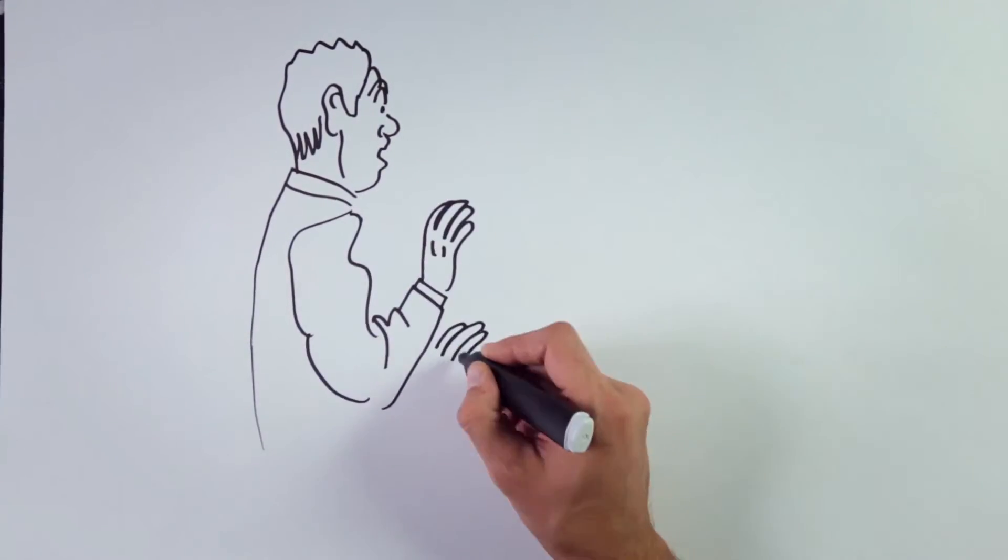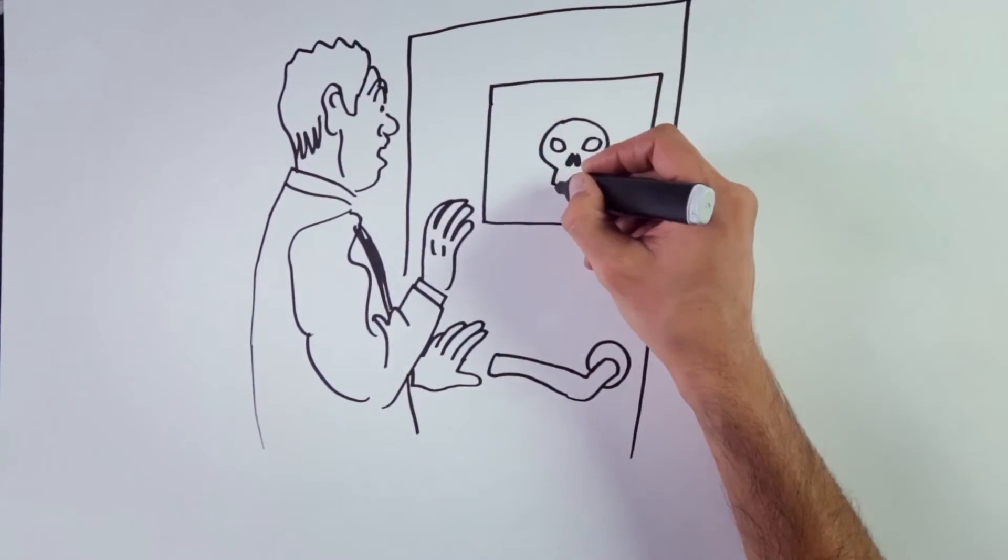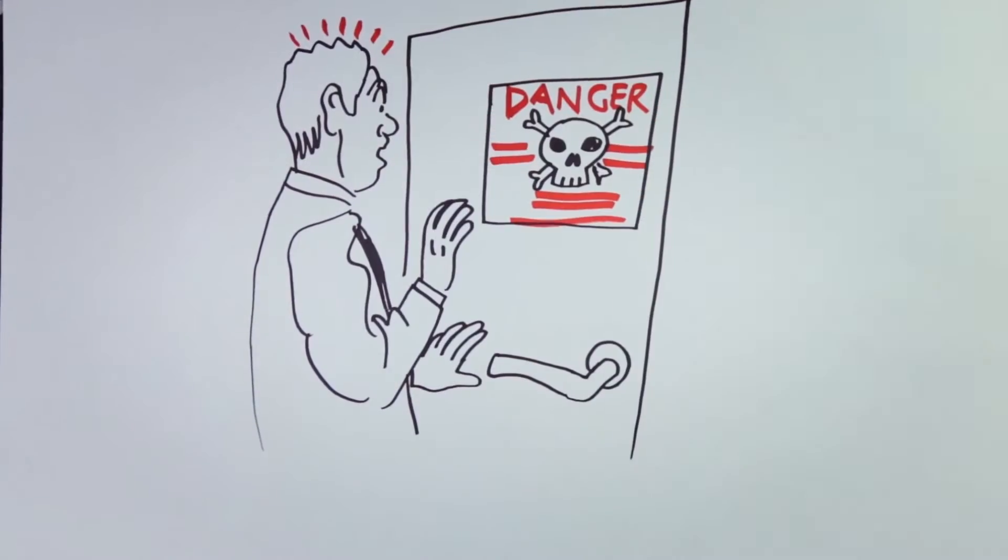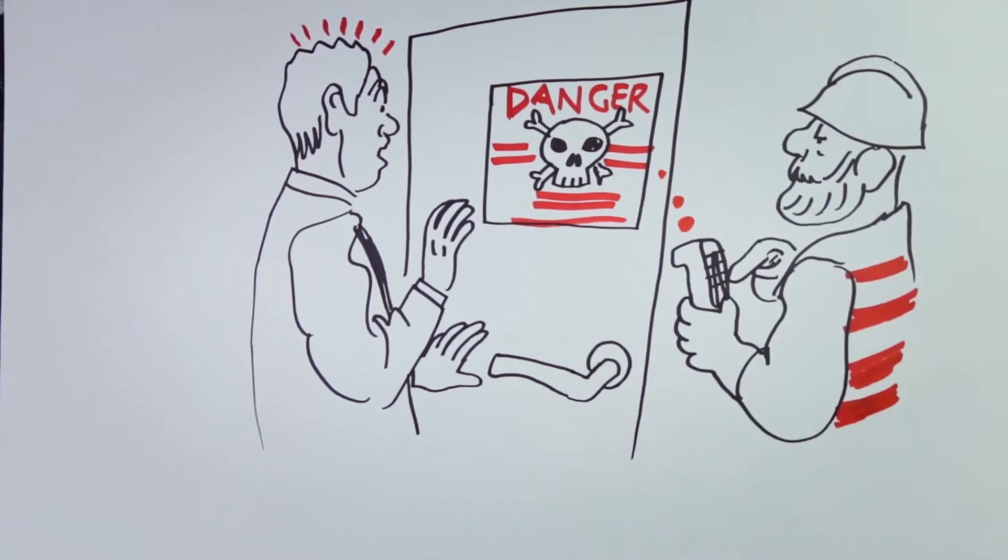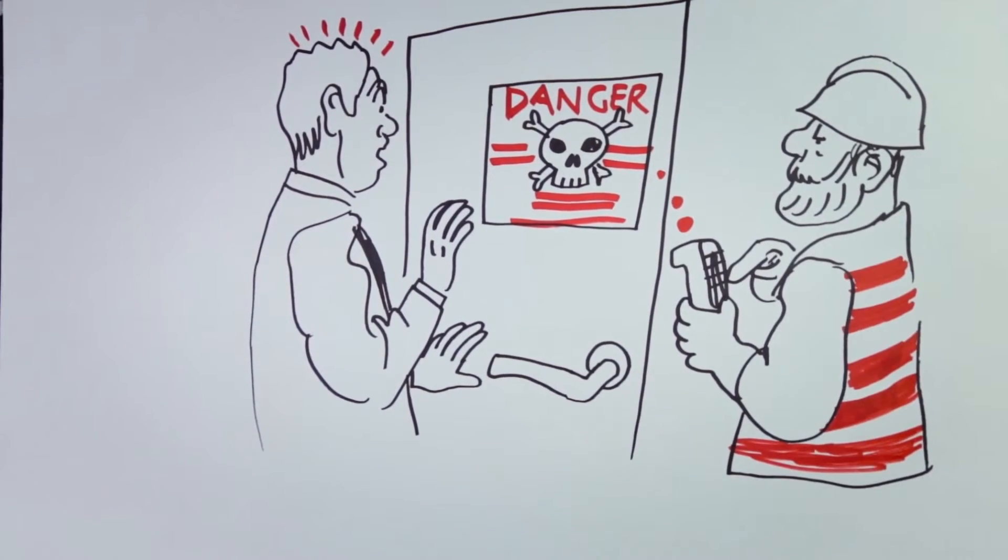If the load belongs to a category that may have been fumigated, the unit could still contain residues of treatment. Prior to entry in the dock area, the goods must be declared as such,